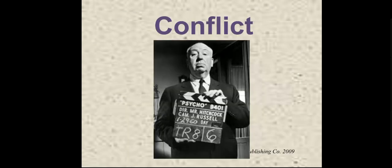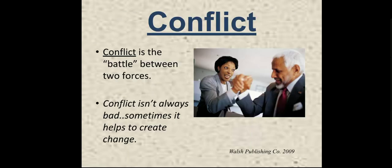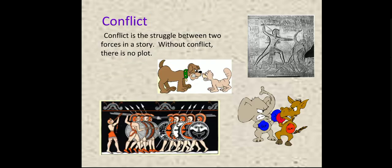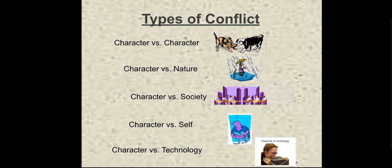What is conflict? Conflict is the battle between two forces — the fight between two forces. Conflict isn't always bad; problems should not always be seen as bad, because sometimes problems help you grow and learn something. Without a conflict, there cannot be any plot, so in order to have a great plot we need a great conflict. Conflict, in simple words, means problem. A conflict can be between two characters, between a character and nature, a character and society, a character and self, or a character and technology.